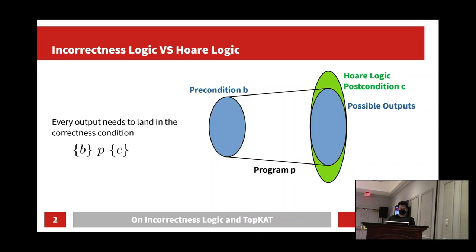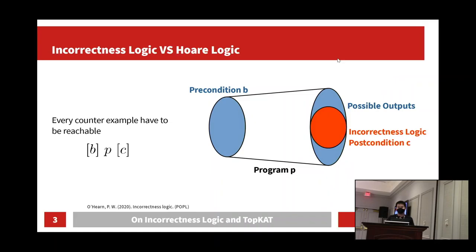Let's first recap on Hoare logic. In Hoare logic, the postcondition specifies the correctness condition. A Hoare triple BPC is true when you execute the program P on the precondition B and all the possible outputs need to be correct — that is, they land in the postcondition C.